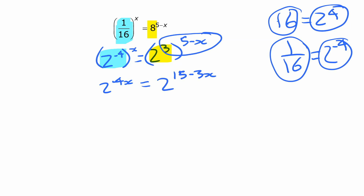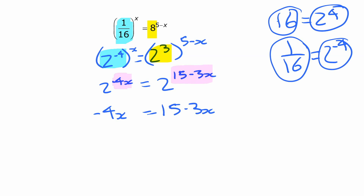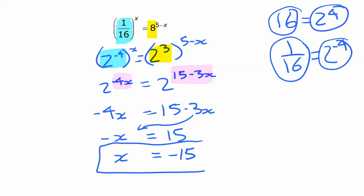We've got the same base on both sides, so those exponents must be equal: negative 4x equals 15 minus 3x. Solving: moving the 3x over gives negative x equals 15, so x equals negative 15. You can check it on a calculator and you'd find that it works.